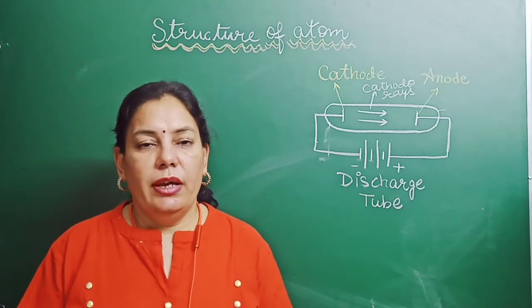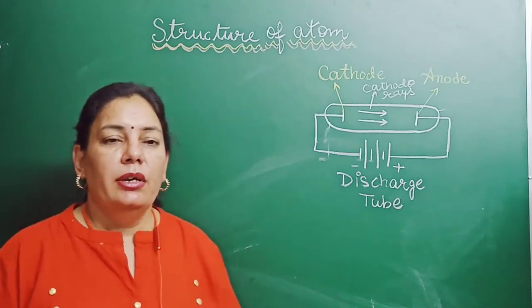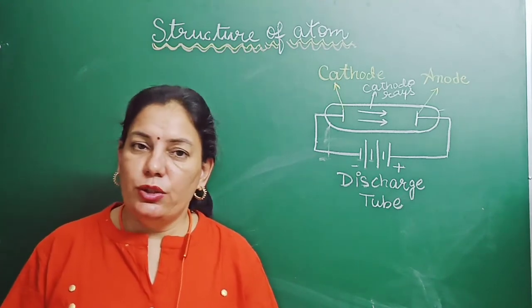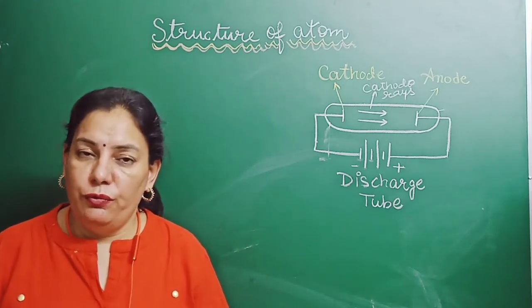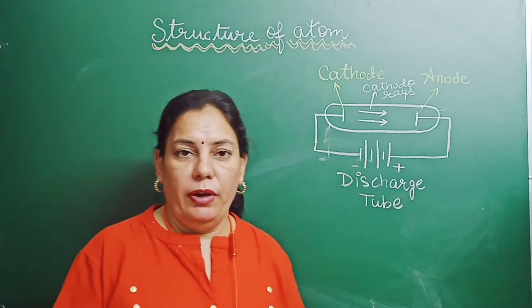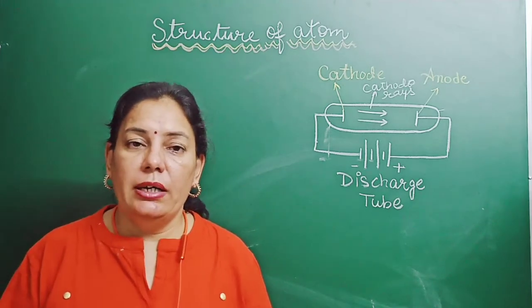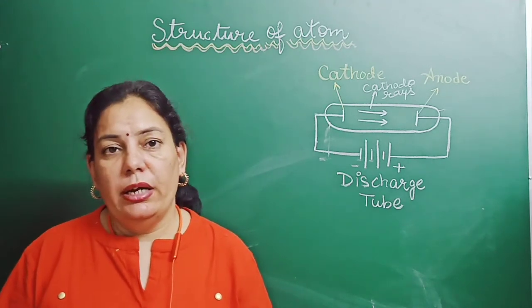Hello students, children. Today we are going to start Chapter 4 of Science, the structure of atom. In this chapter, we shall learn how the various subatomic particles were discovered and various theories proposed by different scientists regarding the structure of atom, what is the meaning of atomic number, atomic mass or mass number, and isotopes and isobars also.